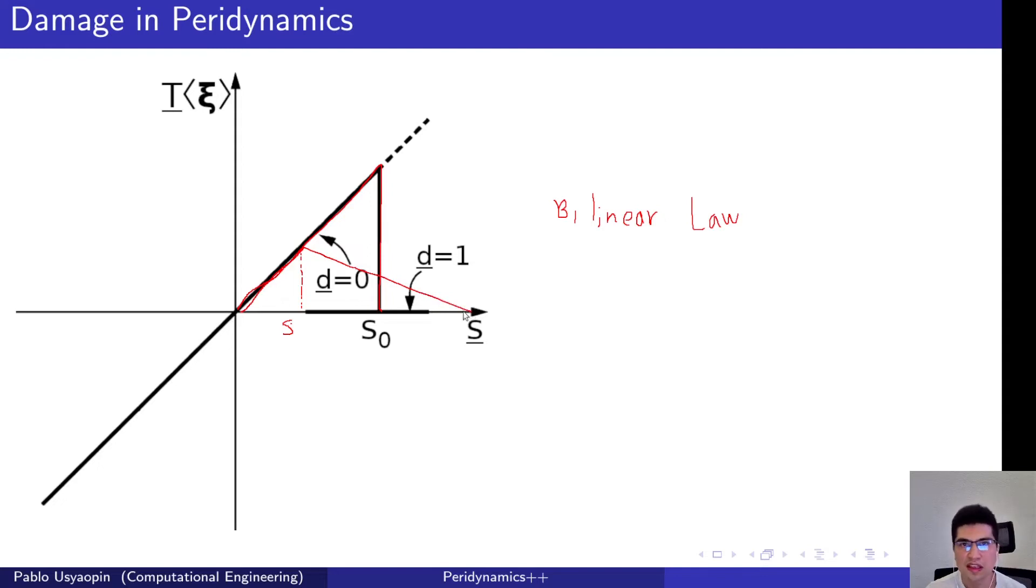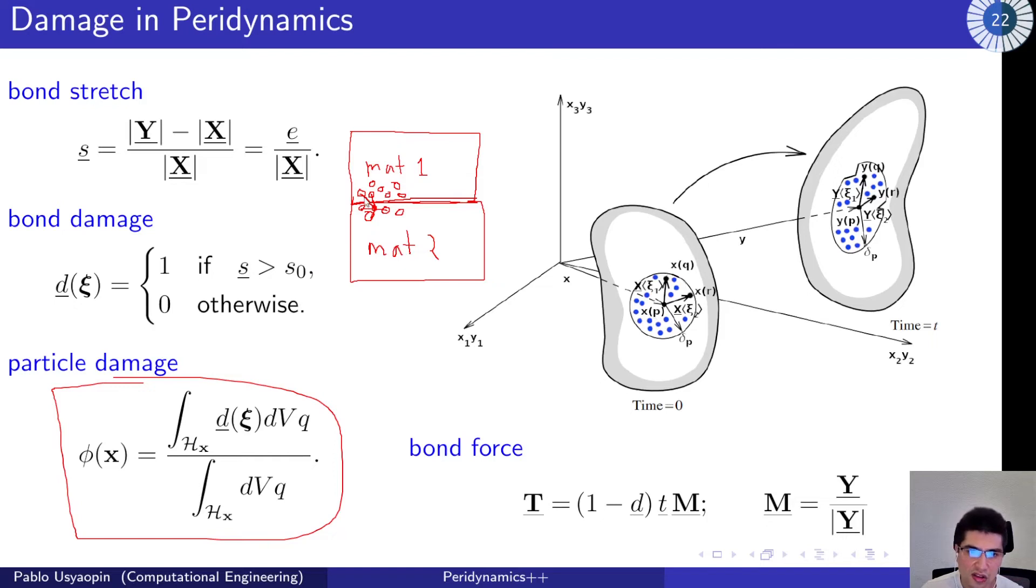So in some way, like inducing some plasticity into the material. So you could say, for instance, that these two bonds could behave in this manner using this bilinear law, whereas these other three bonds here would behave using the damage law that we previously mentioned.